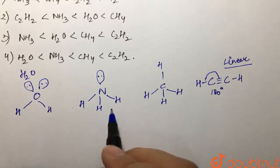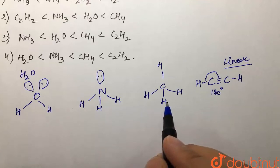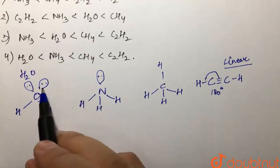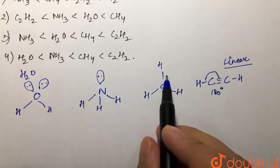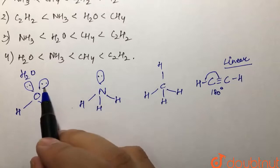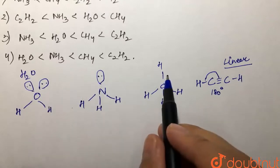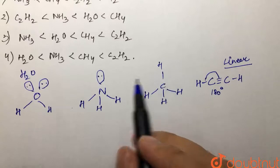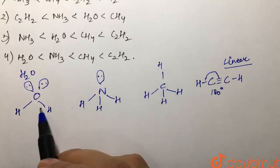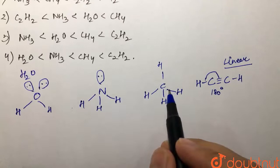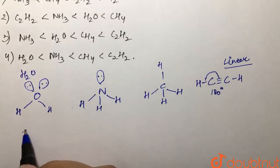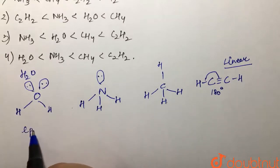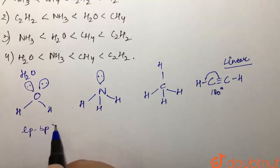Now, water, ammonia, and methane are all tetrahedral in electron geometry, but due to different numbers of lone pairs — two lone pairs in water, one in ammonia, and none in methane — there is a difference in shape. Water is V-shaped or bent, ammonia is pyramidal, and methane is tetrahedral.